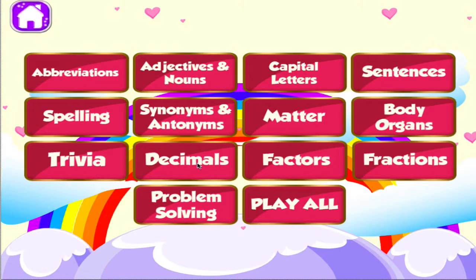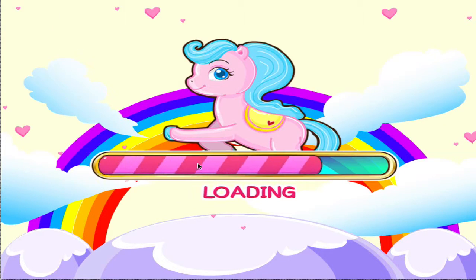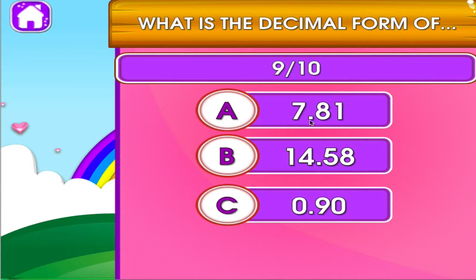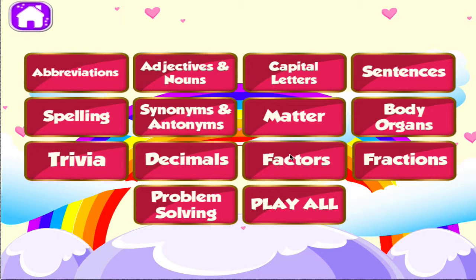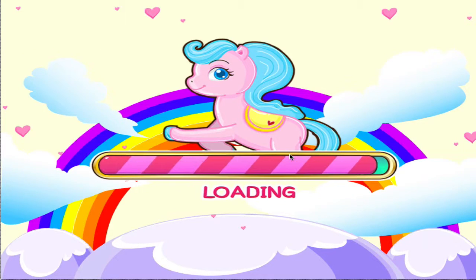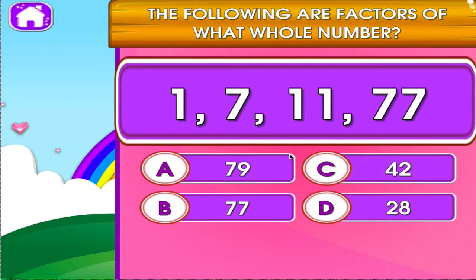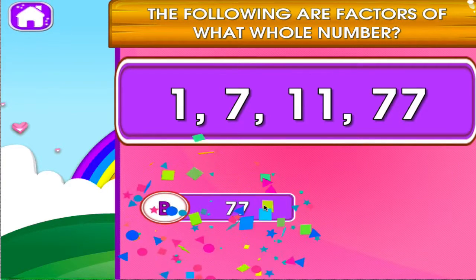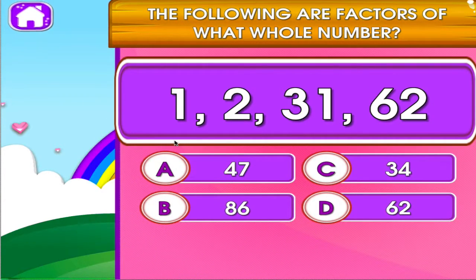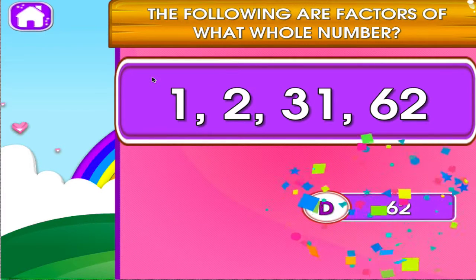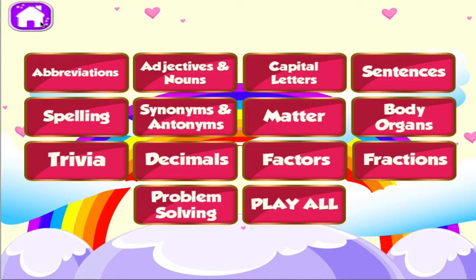Choose the activity you want to play. Decimals. Tap the correct answer. Woo-hoo! Choose the activity you want to play. Factors. Tap the correct answer. You can do this! Tap the correct answer. Superb!